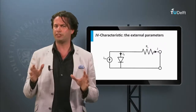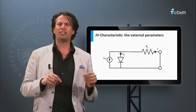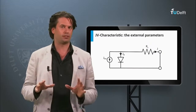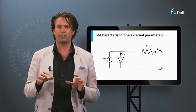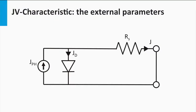How does the series resistance appear in an electric circuit? Here we will use a zigzag line as a symbol for the resistor. Note that sometimes a rectangle is used as a symbol for the resistor as well. The ideal solar cell is a parallel connection of a current source and a p-n diode. The series resistance is, as the name already reveals, connected in series with these two elements. If the solar cell generates current, the solar cell will lose voltage over the series resistance.